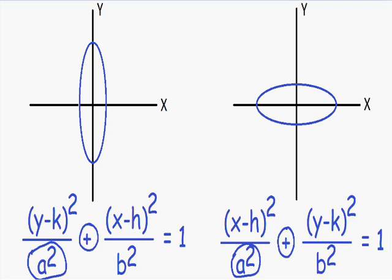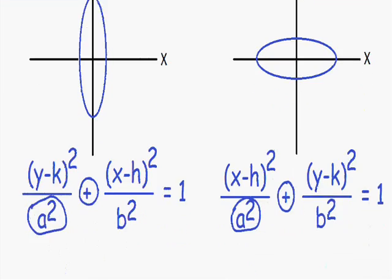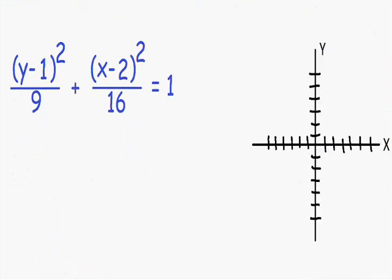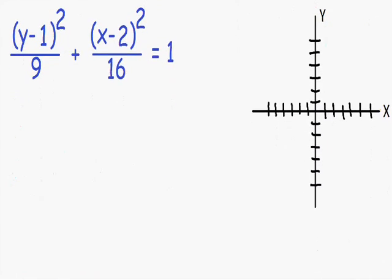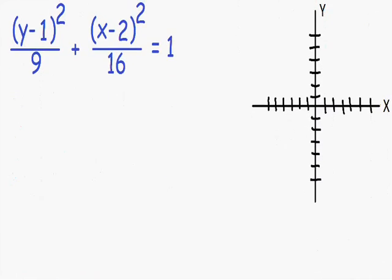So those are just some basic things I wanted to cover before we start our example. Here we have the problem: (y minus 1) squared over 9, plus (x minus 2) squared over 16, is equal to 1. Notice how we have a plus sign in the middle of this equation, so we know that it's an ellipse.